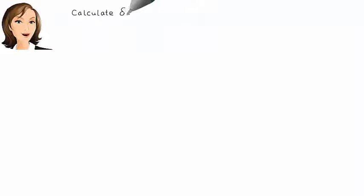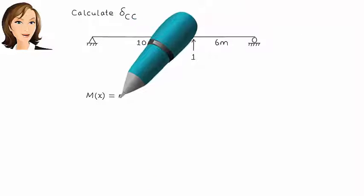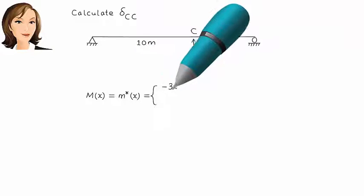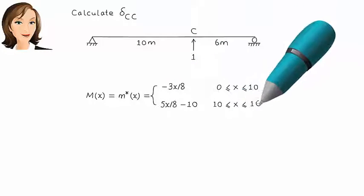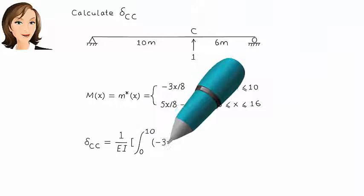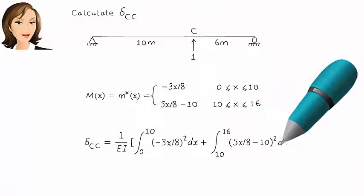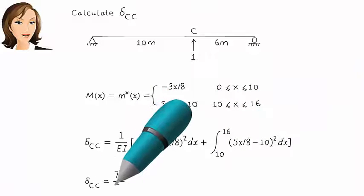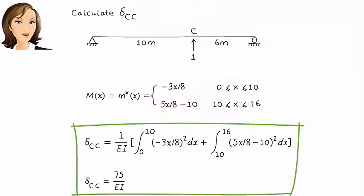Delta C,C — the vertical displacement at C due to a unit load placed at C — can be calculated in the same manner. Here are the moment equations, and here is the displacement.